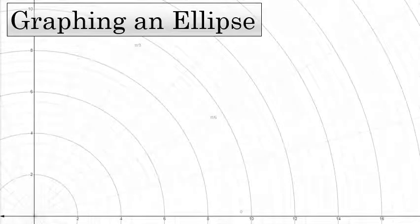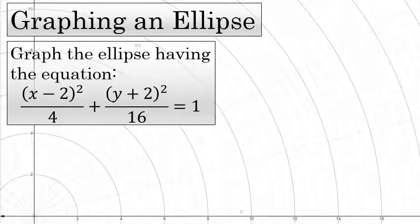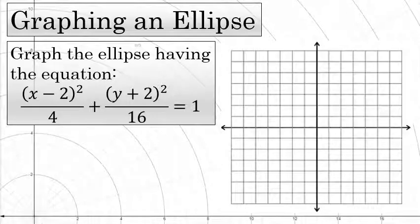Drawing the graph of an ellipse is fairly straightforward. It's actually pretty easy if you know how to look at an equation and identify the parts of the ellipse from that equation. Here we're asked to graph the ellipse with the equation x minus 2 squared over 4 plus y plus 2 squared over 16 equals 1.